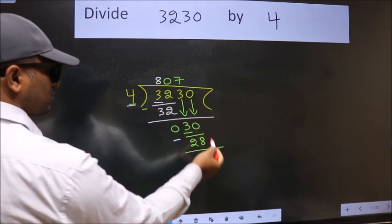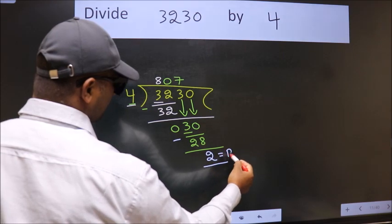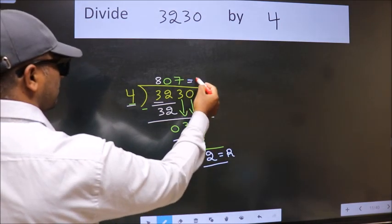No more numbers to bring down. So we stop here. This is our remainder and this is our quotient.